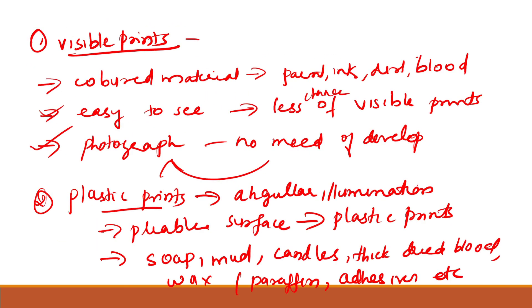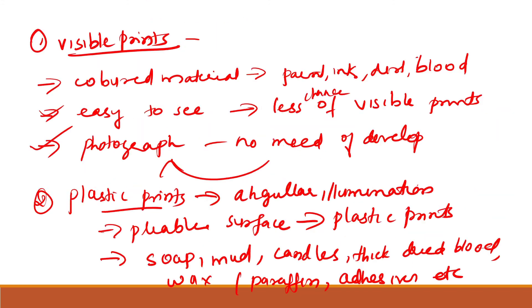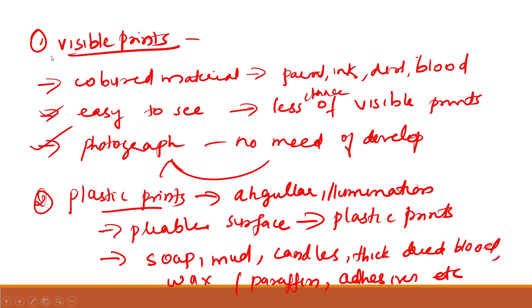These are the three types of prints found at a crime scene: visible prints, plastic prints, and latent prints. In the next session, we will discuss searching for latent prints and how to develop them. Thank you.